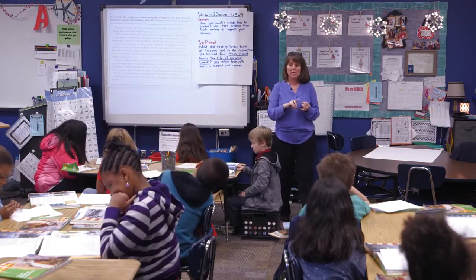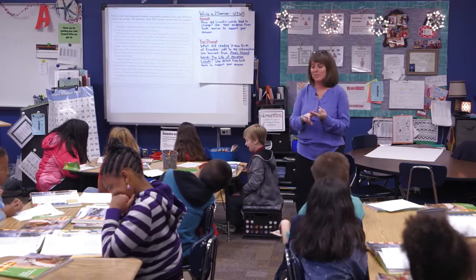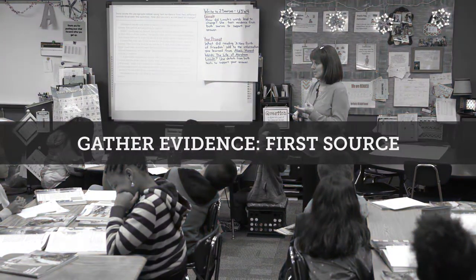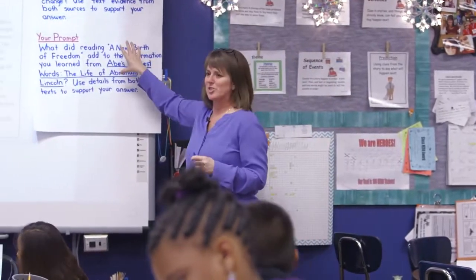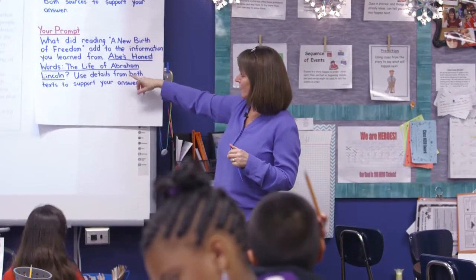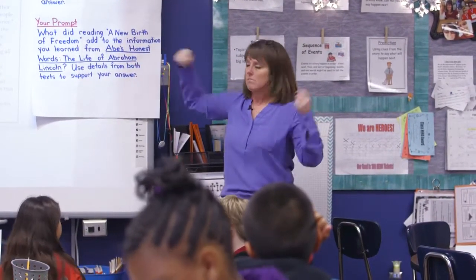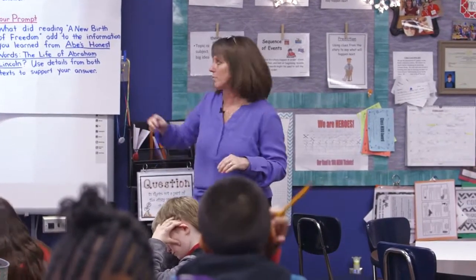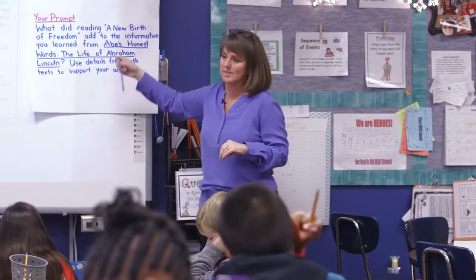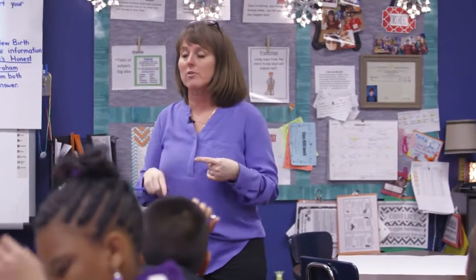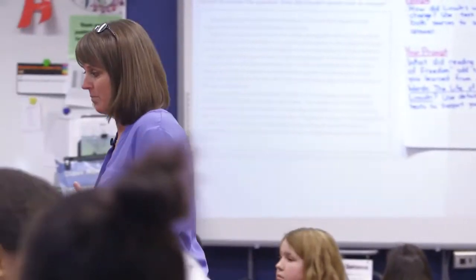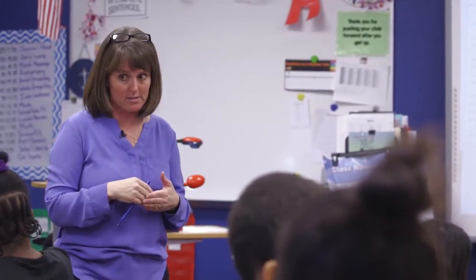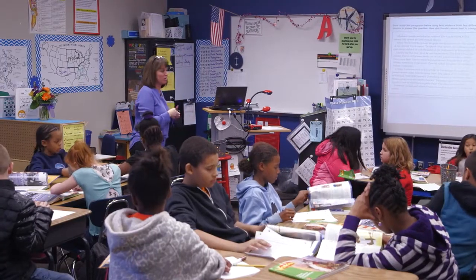So we have read the prompt. We know what they want us to do, so let's start looking for text evidence. Which one do you think we should start with — A New Birth of Freedom or Abe's Honest Words? Abe's Honest Words. Alright, sounds like that's the majority. We're going to go to Abe's Honest Words, and I want you to start looking through and finding evidence with a page number of something that you learned.